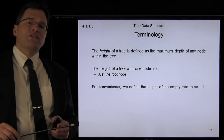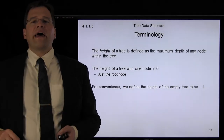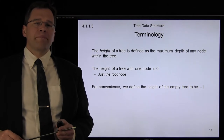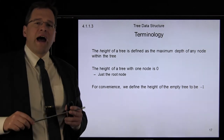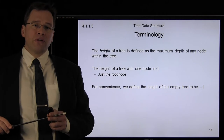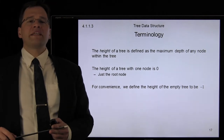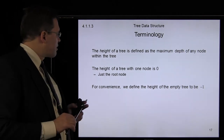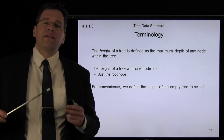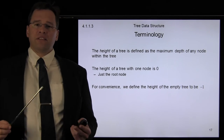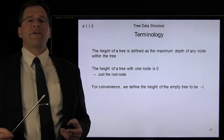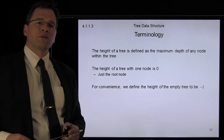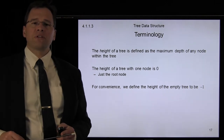The height of a tree is going to be defined as the maximum depth of any node within the tree. The height of a tree with just one node — a root node with no children — will be said to have height zero. And for convenience, we will define the height of a tree that has zero nodes in it to have height negative one. This will actually come in very useful with a number of the data structures in subsequent topics.